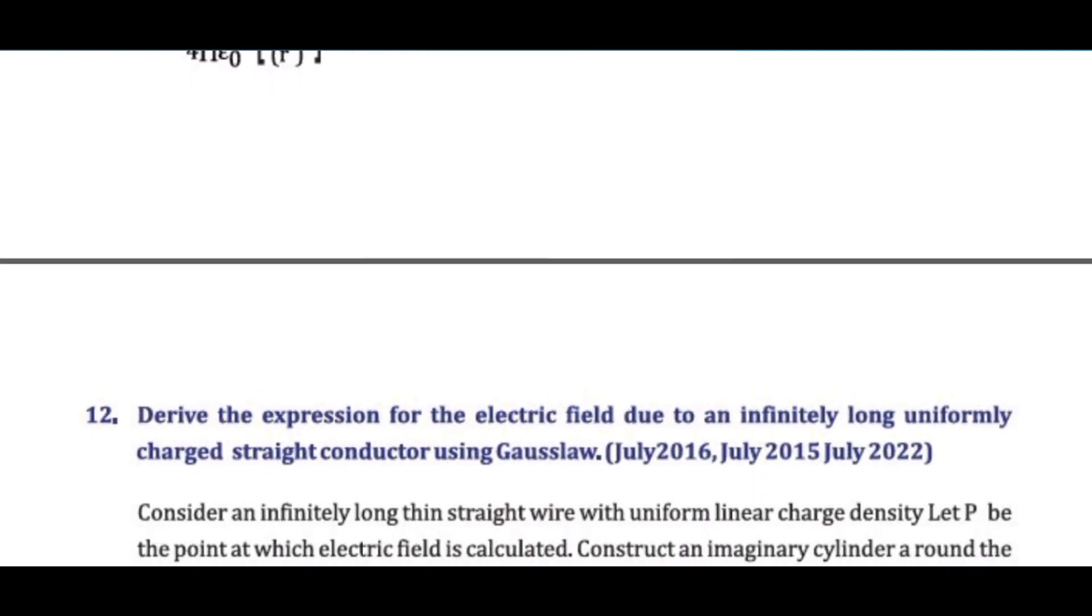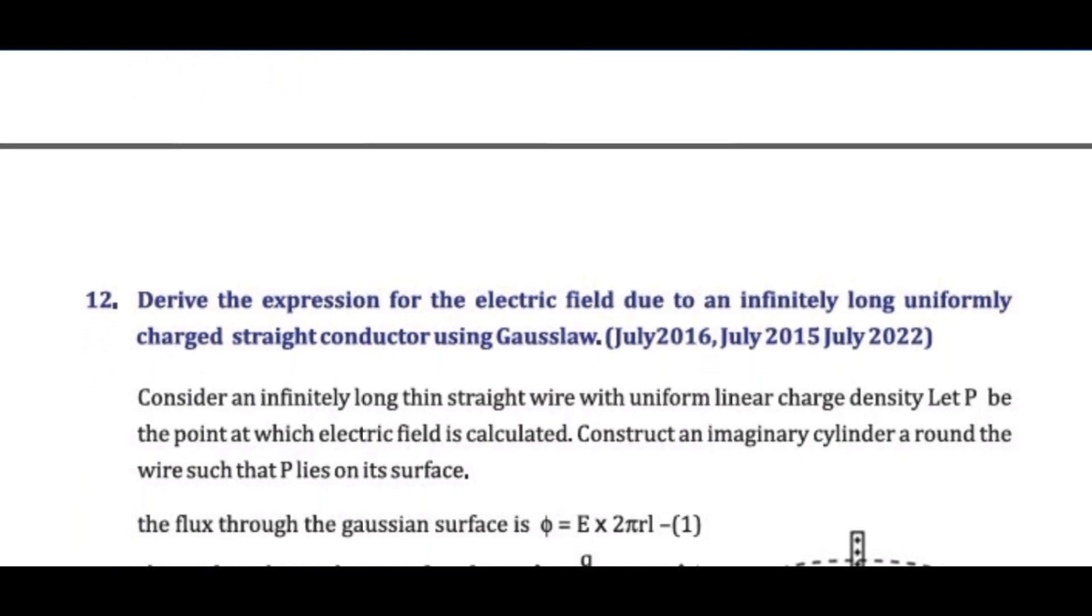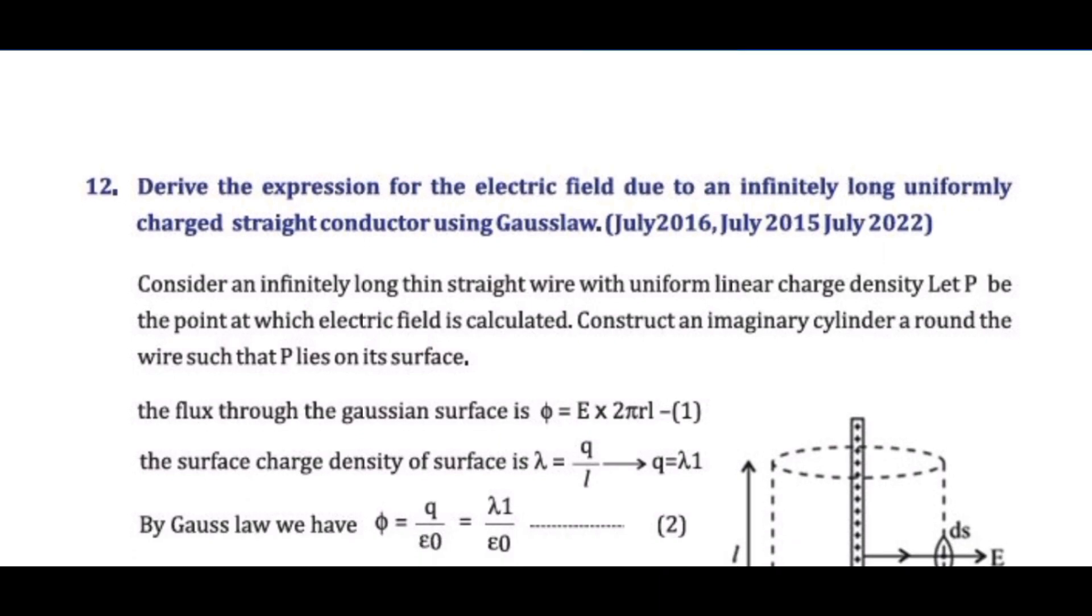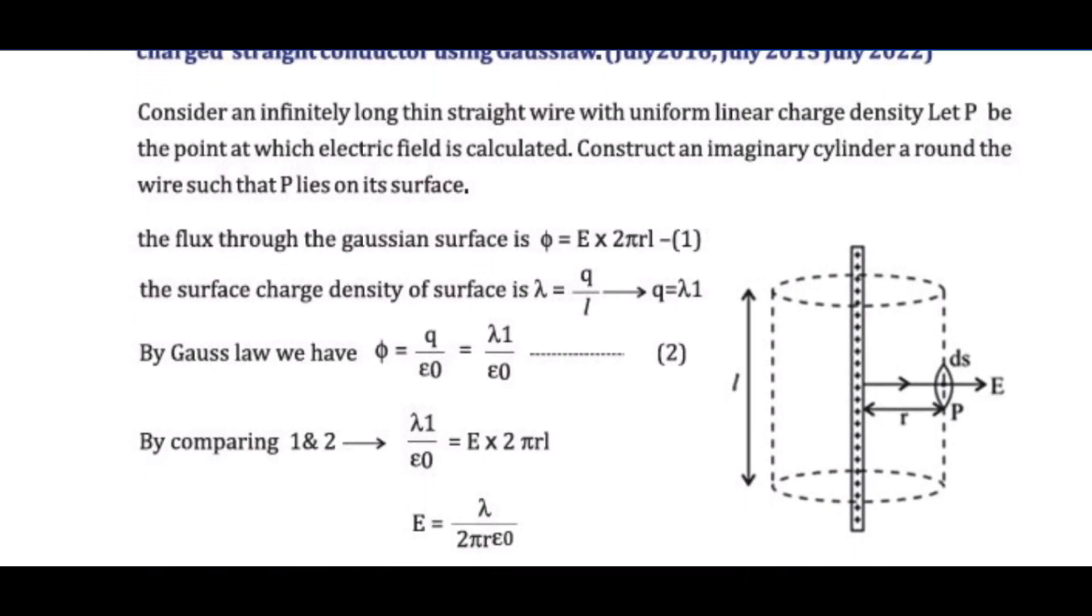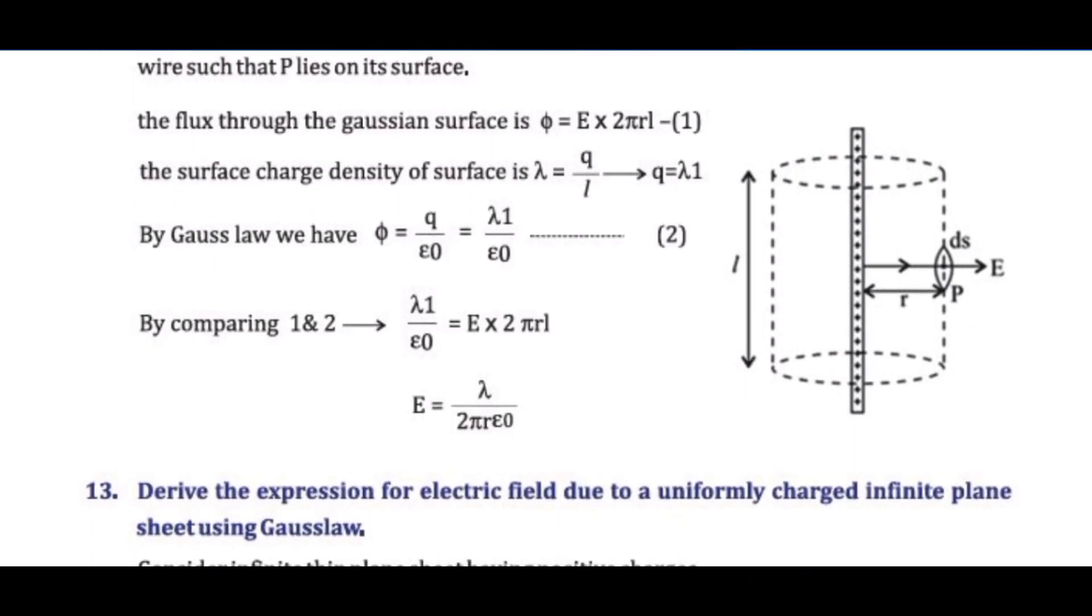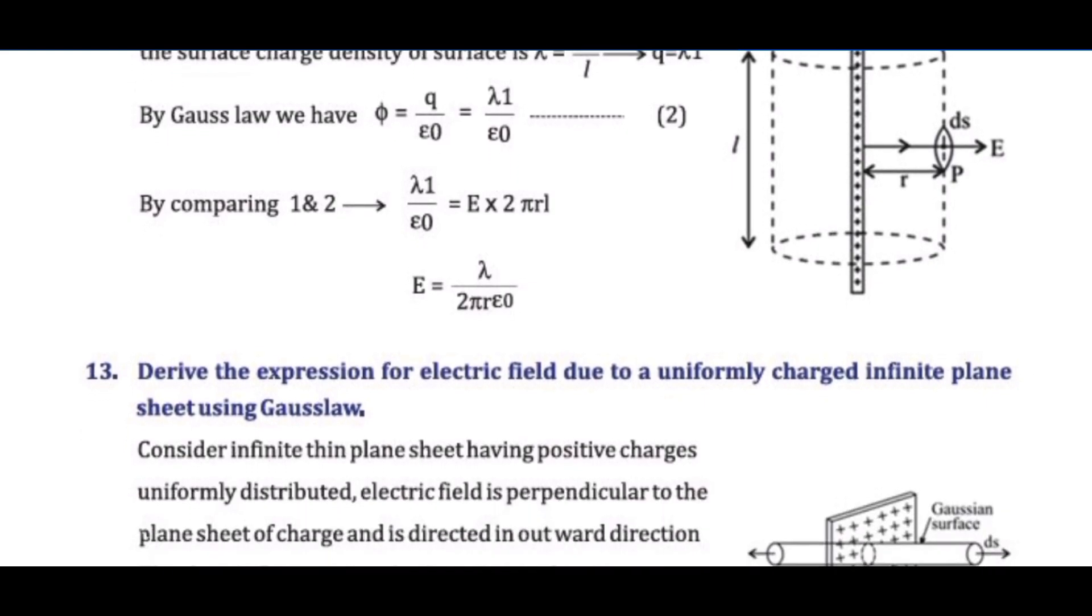Question 12: Derive the expression for the electric field due to an infinitely long uniformly charged infinite plane sheet using Gauss law. Answer: To be derived using cylindrical Gaussian surface. E equals sigma over 2 epsilon 0.